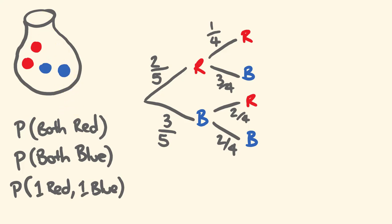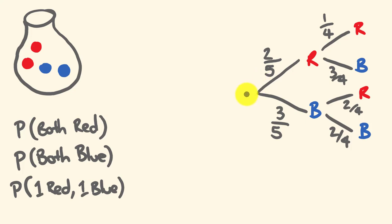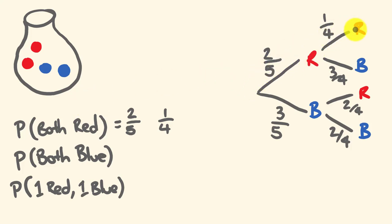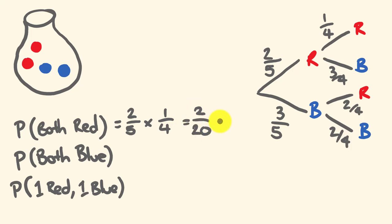To find the probability of getting both red, we follow that pathway. The first red has a 2 in 5 chance, and the second red has a 1 in 4 chance. This is the product rule: if we're talking about something occurring in a series, we multiply to find the probability of that particular pathway. So 2 times 1 is 2, and 5 times 4 is 20, giving us 2 in 20, which simplifies to 1 out of 10.